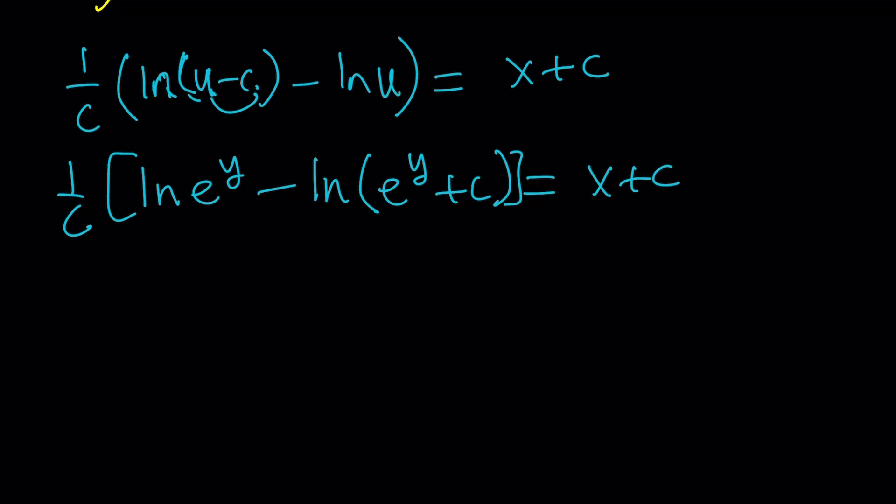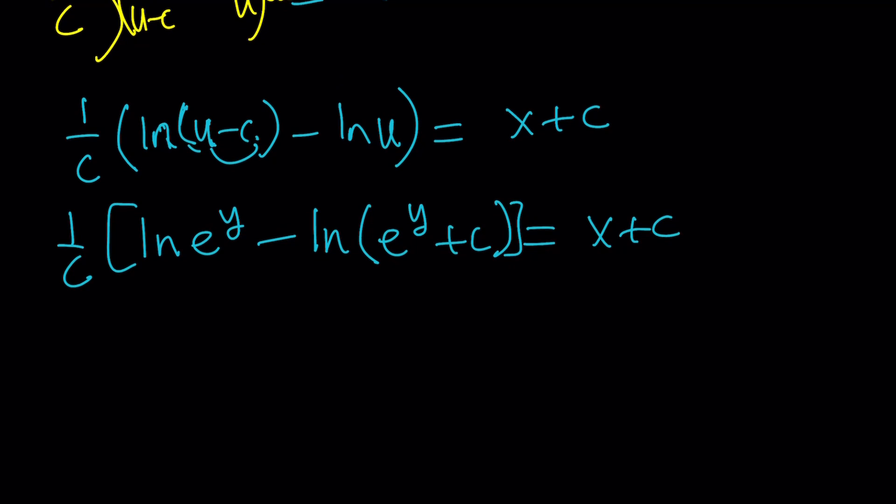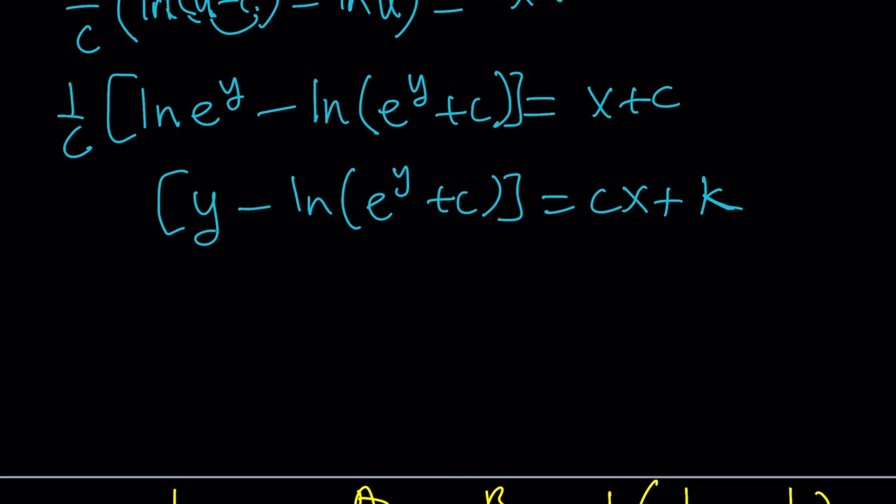And from here, do you think I can do anything? Well, you can kind of simplify this because this is y. And then minus ln e to the y plus c. And then, of course, you can multiply both sides by c if you want. Cx plus c squared. And c squared, you can just multiply by another constant. Let's call that k. And obviously, you can do a little bit of work with this. Like, for example, I could probably write this as ln e to the y over e to the y plus c by using the quotient rule. And then there's a c. You can put that on the other side, like I said earlier. Then you can go ahead and do e to the both sides and then solve for e to the y. Again, that's going to be very painful. But let's go ahead and take a look at the result from Wolfram Alpha one more time. And then we'll finish up with that.